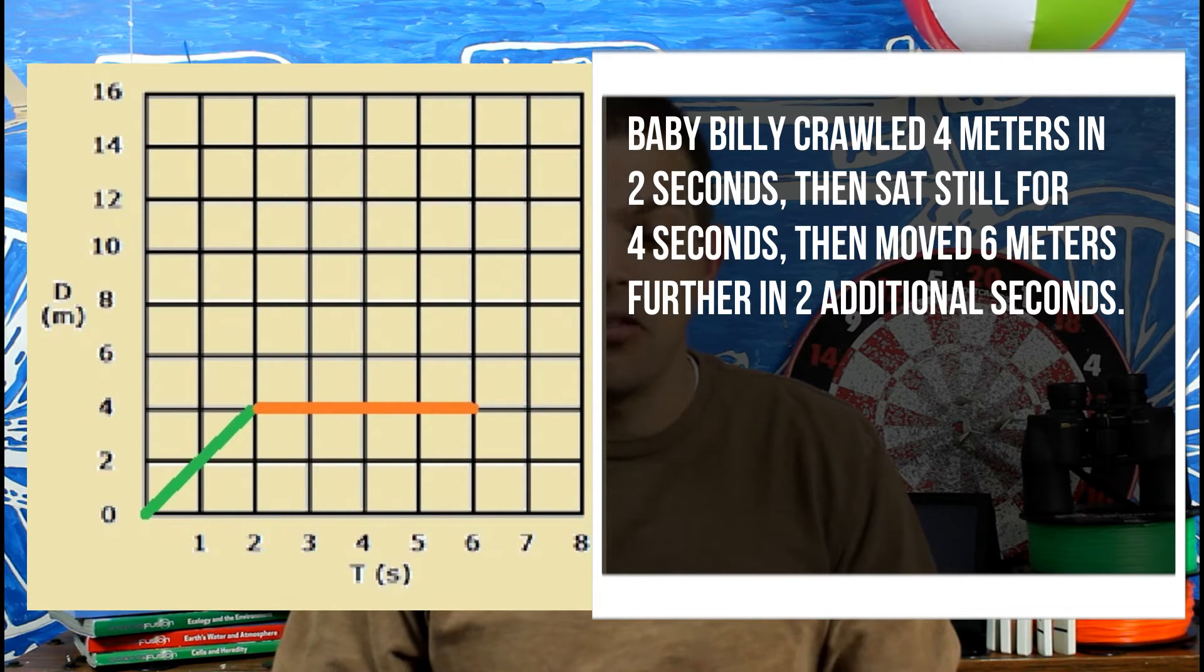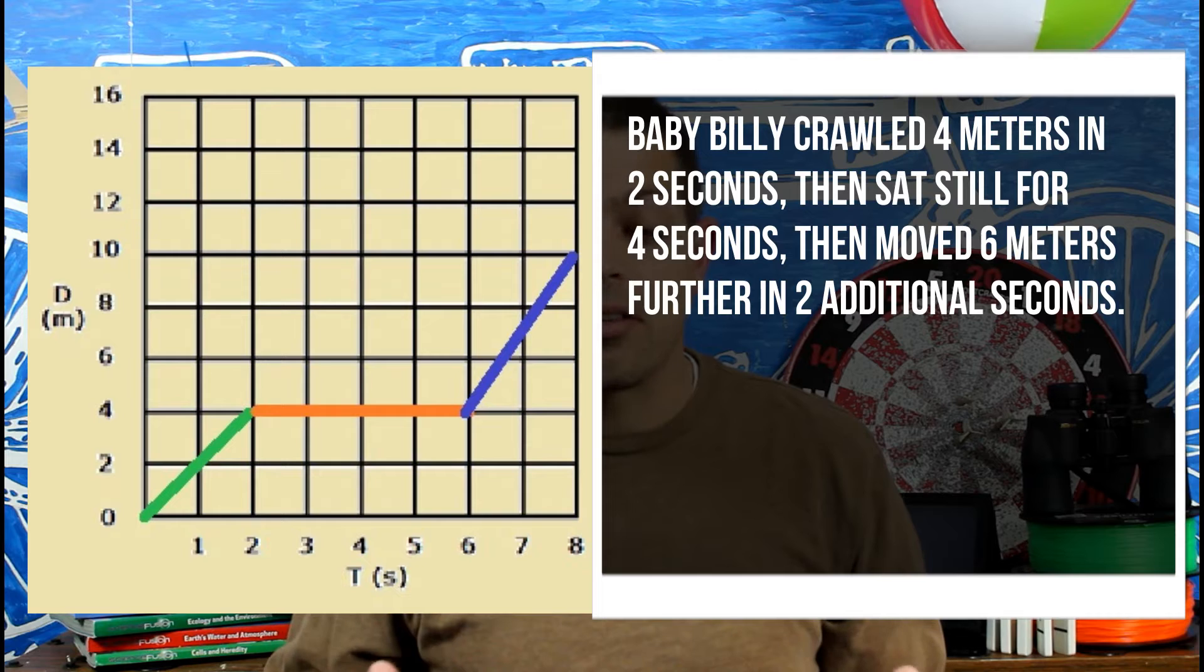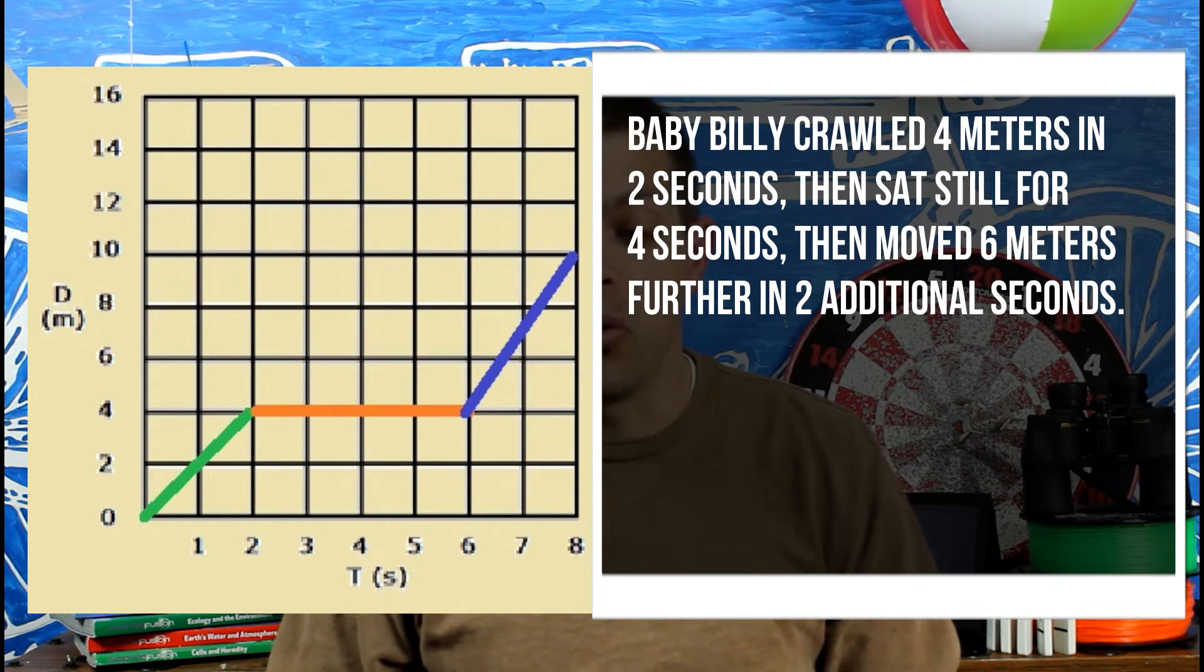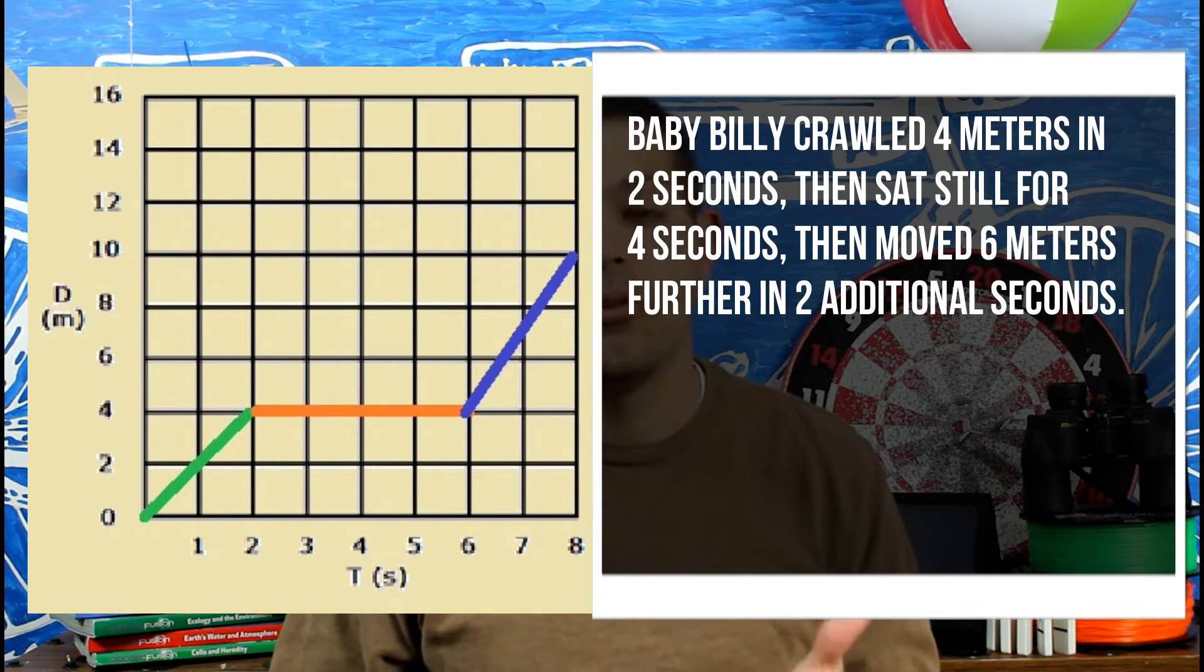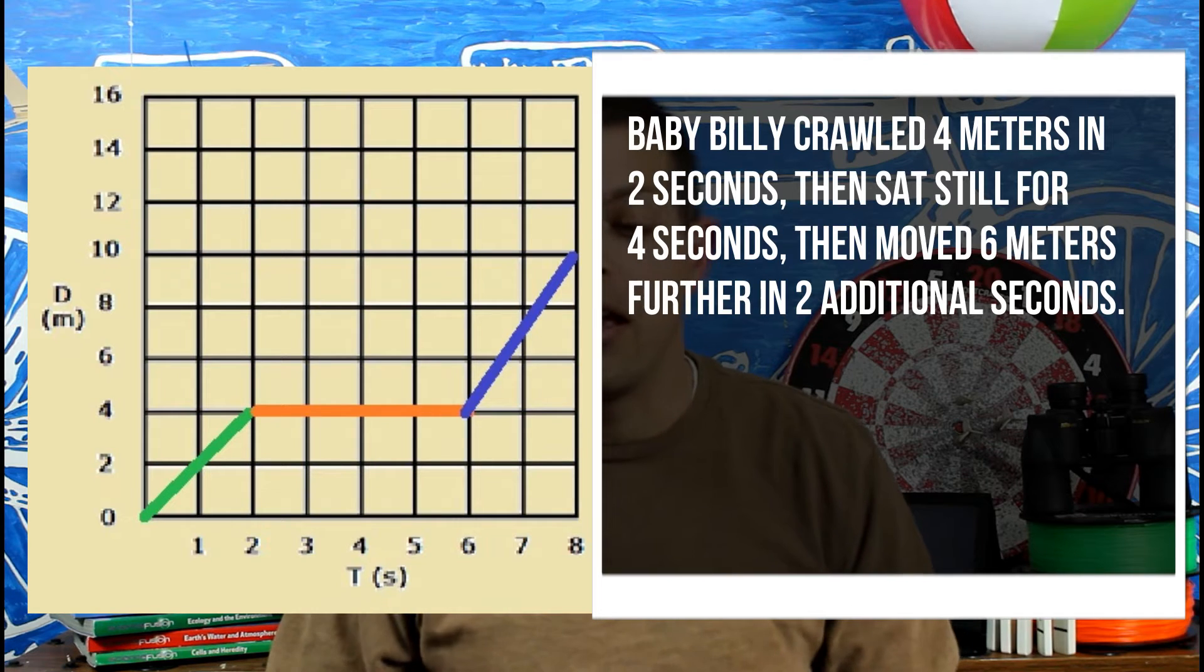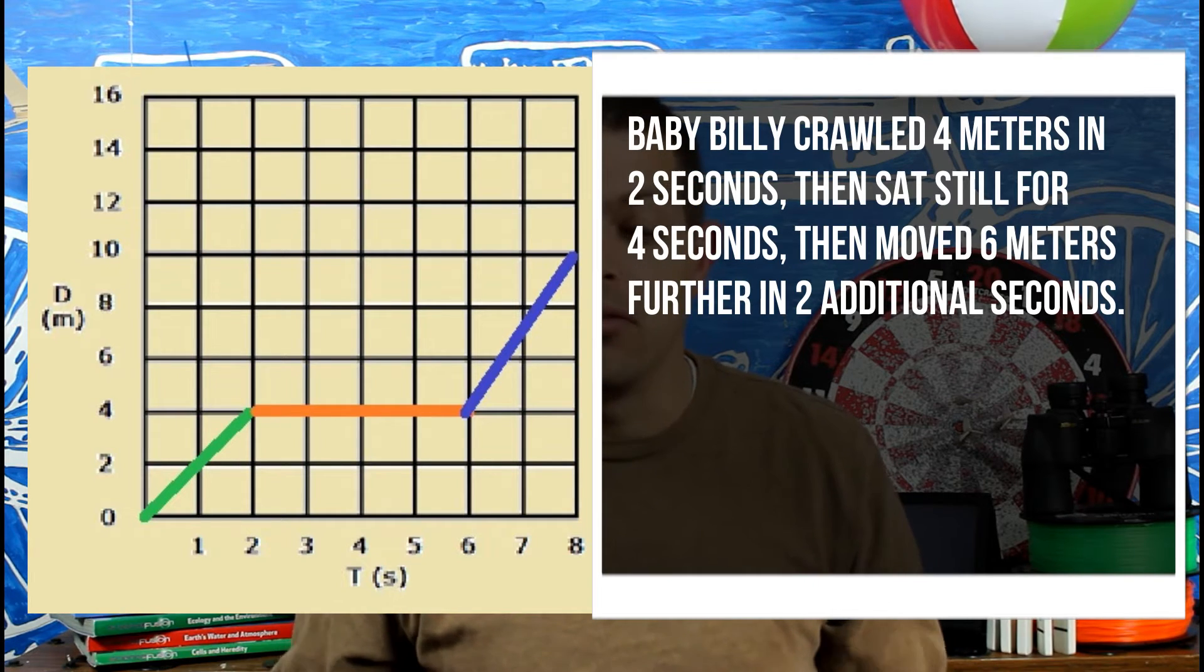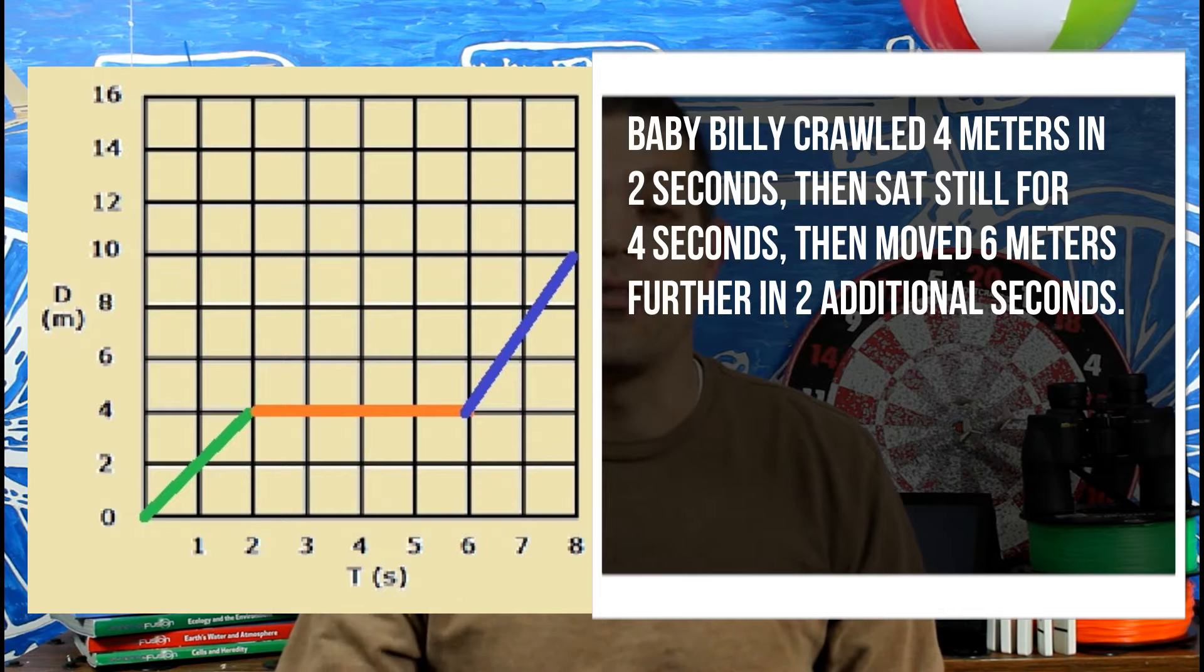And then last but not least, he continues to move six meters farther. So you're going to see that on the distance part of the graph, he's going to be moving to a total of 10. He was at four, moves six more to get to 10 meters. And in all, we see that it takes a total of eight seconds to get those 10 meters.